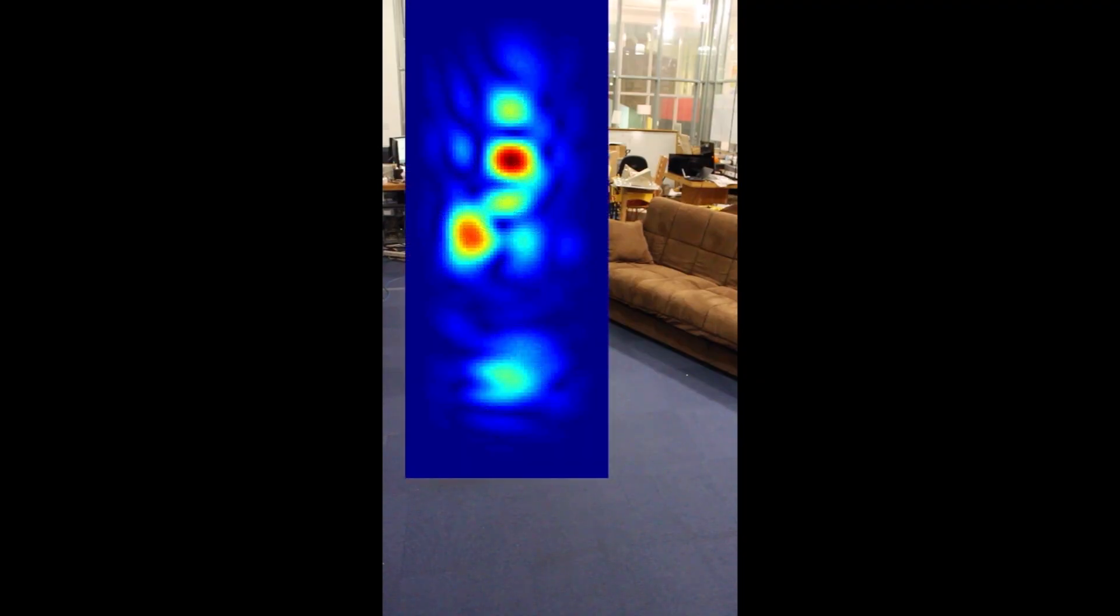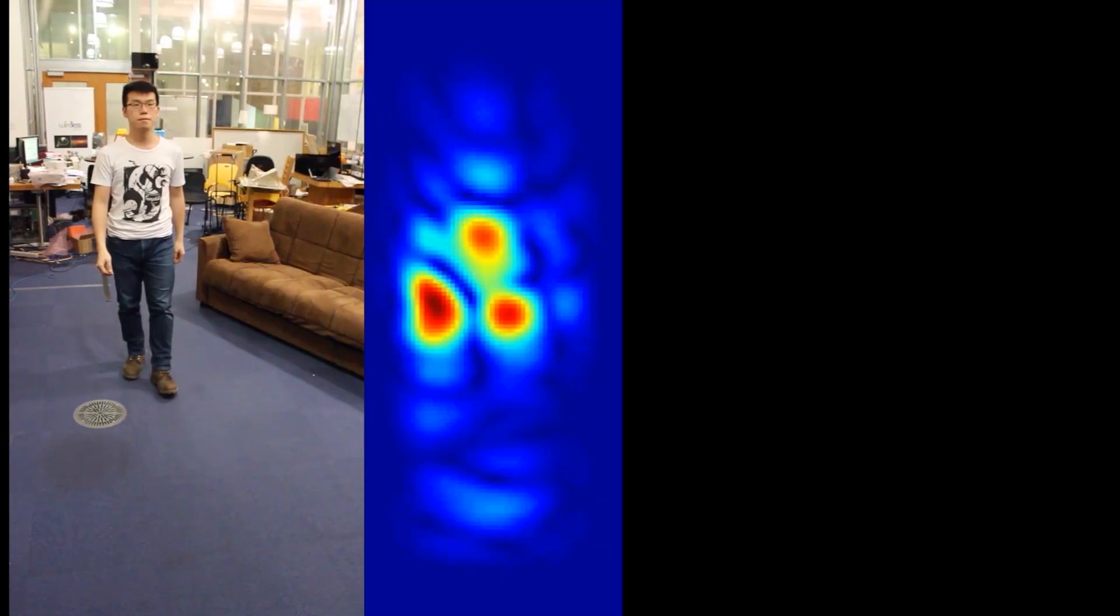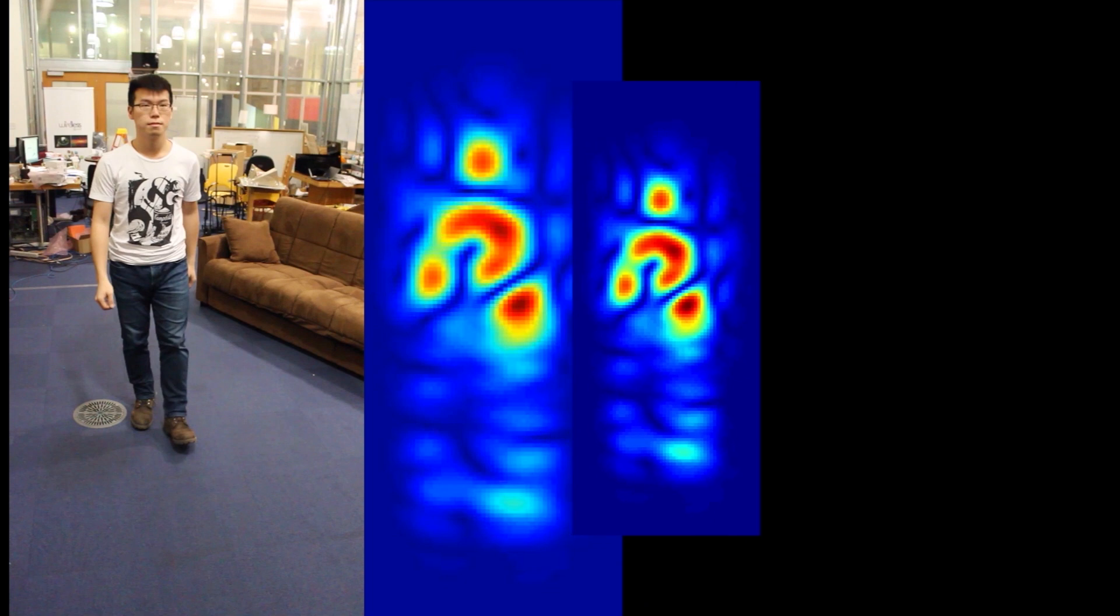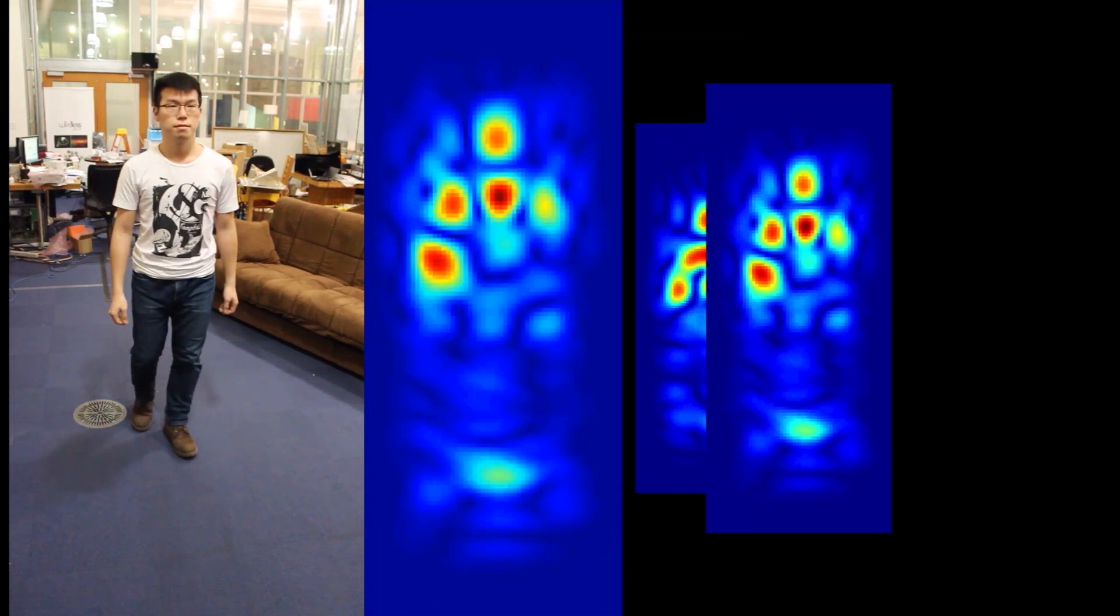Here, we show the output of the device as the person walks. At different points in time, different parts of the human body reflect the signal and the device captures multiple snapshots at various points in time.